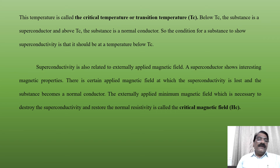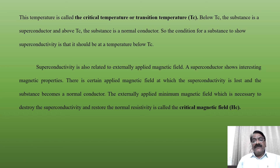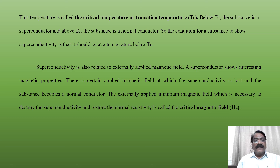Superconductivity is also related to the externally applied magnetic field. A superconductor shows interesting magnetic properties. There is a certain applied magnetic field at which superconductivity is lost and the substance becomes a normal conductor. The externally applied magnetic field which is necessary to destroy the superconductivity and restore the normal resistivity is called the critical magnetic field Hc.